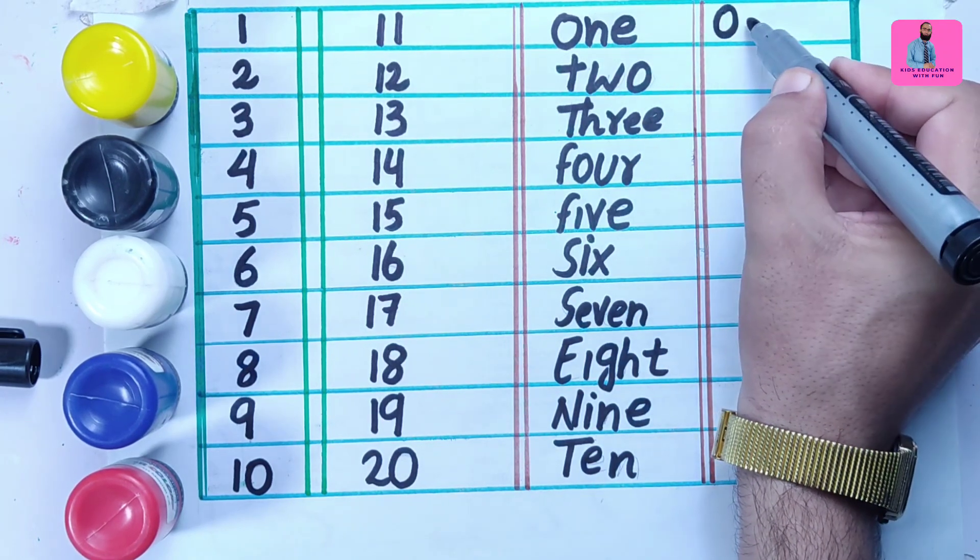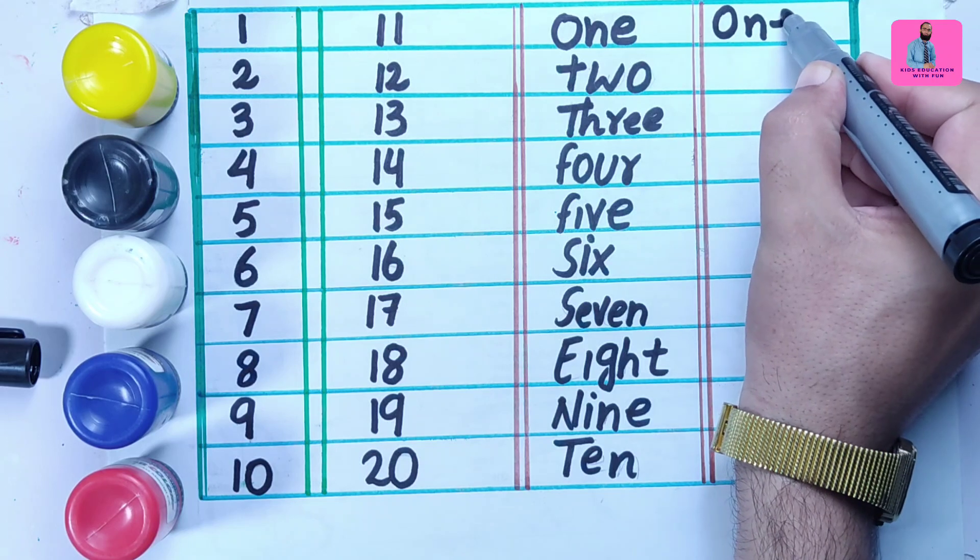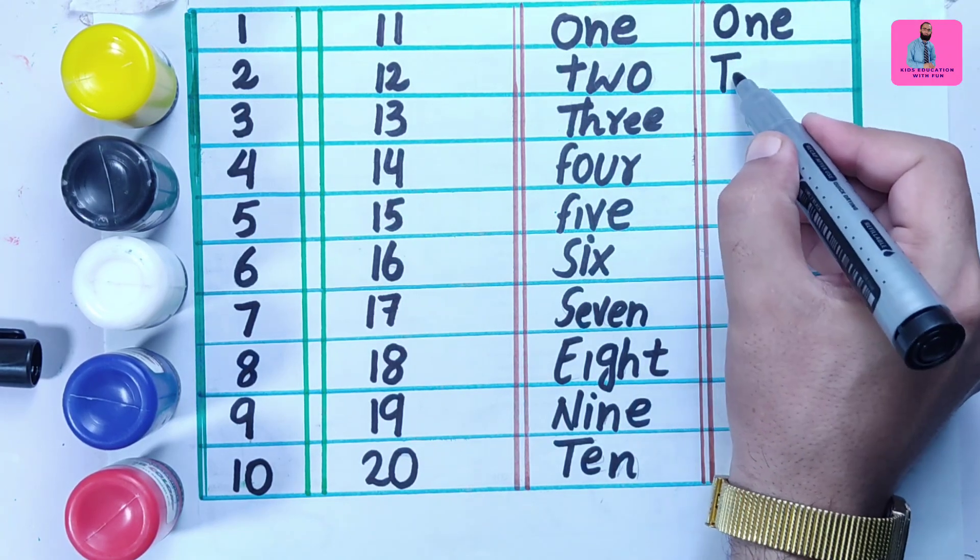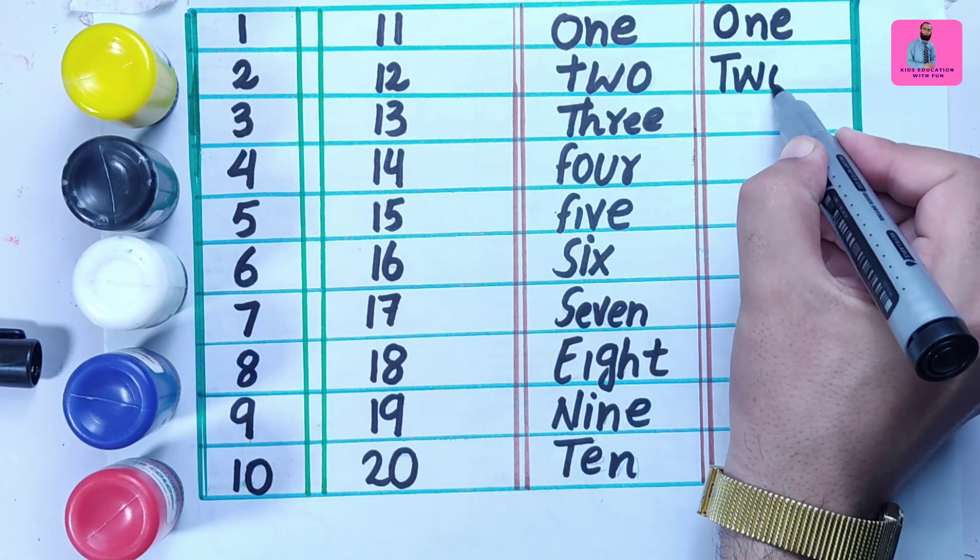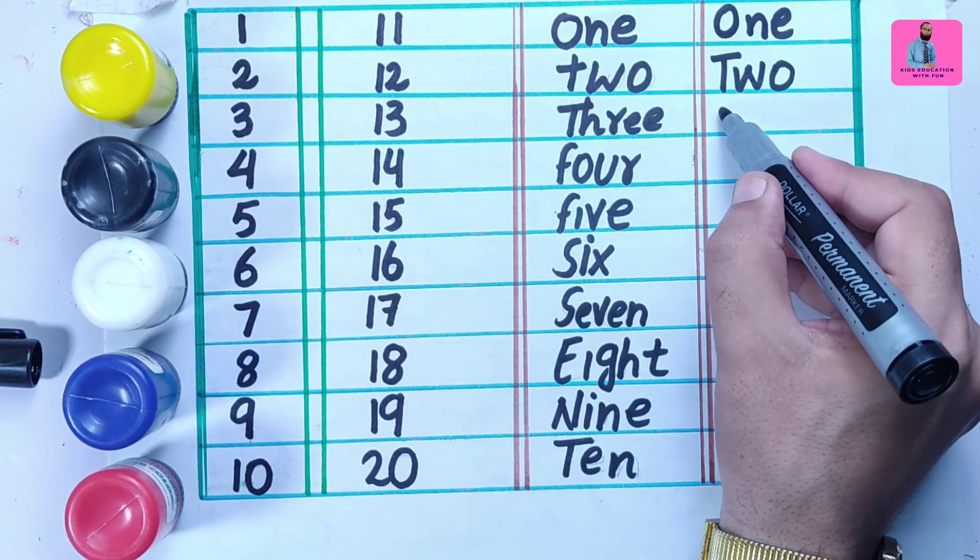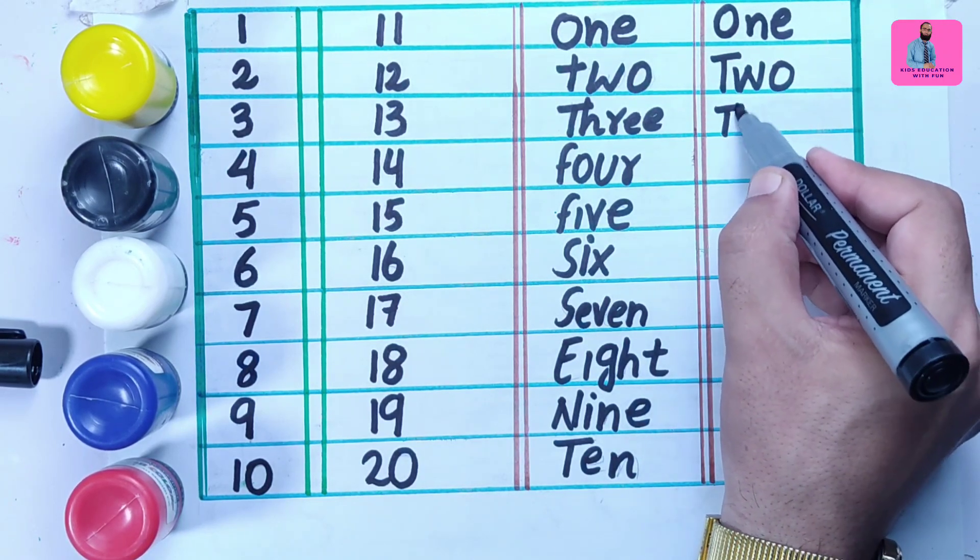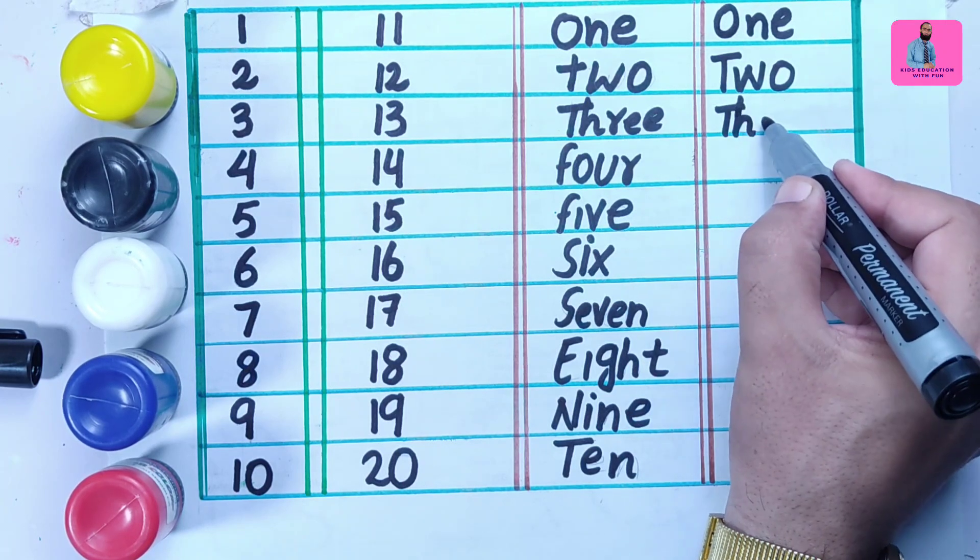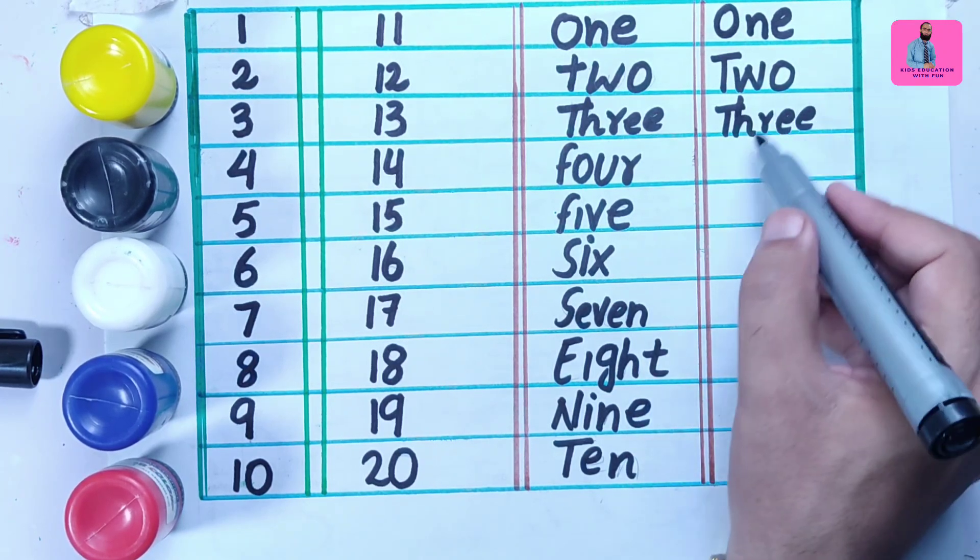O, N, E. One. T, W, O. Two. T, H, R, E, E. Three.